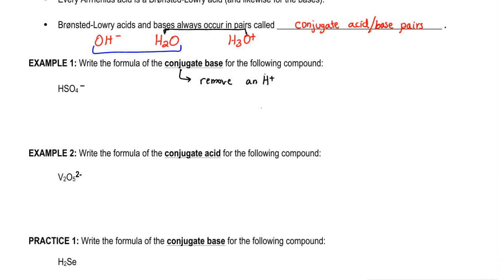Remember, conjugate base means we'll remove H+. So just do a number line. This number line will help us figure out what the new charge is going to be.